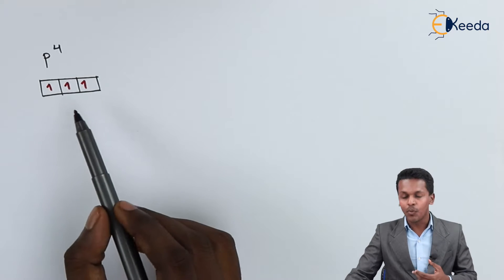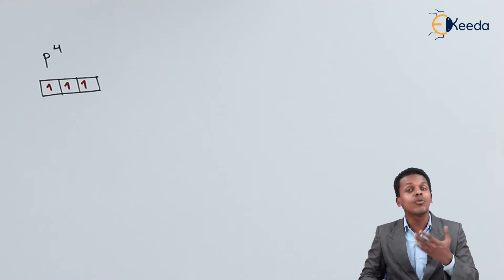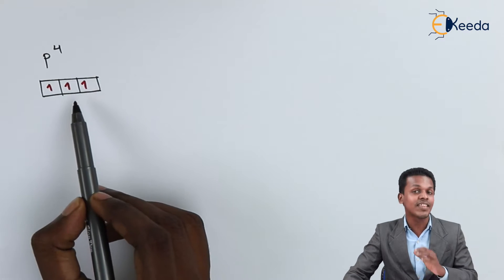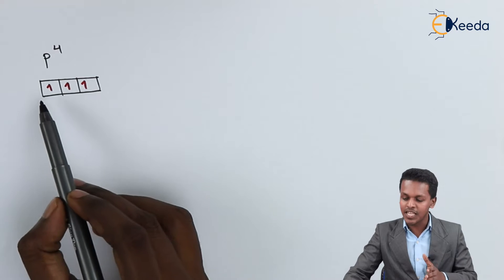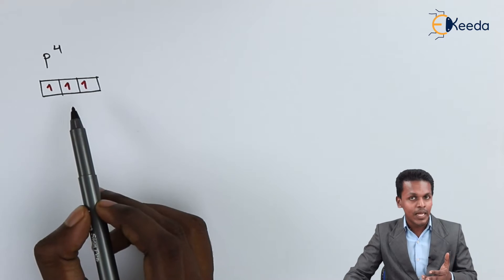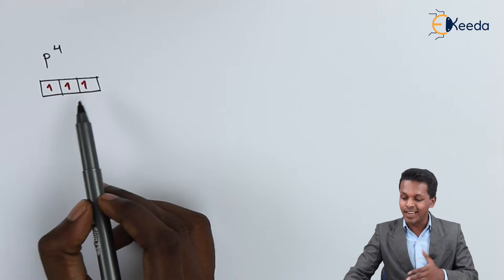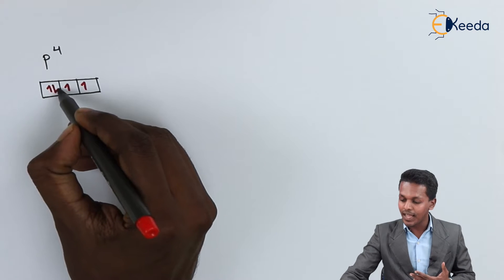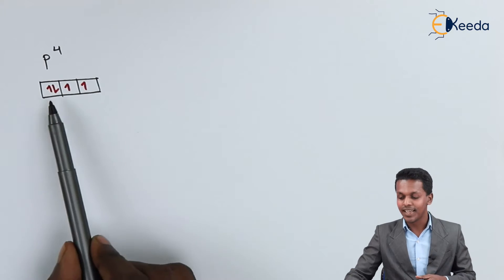And now let me talk about the 4th electron. The 4th electron will be paired. But here you can see that all the electrons are having the same spin, that is plus half, plus half and plus half. While the 4th electron when it will enter, it will be paired and it will have an opposite spin in this manner.